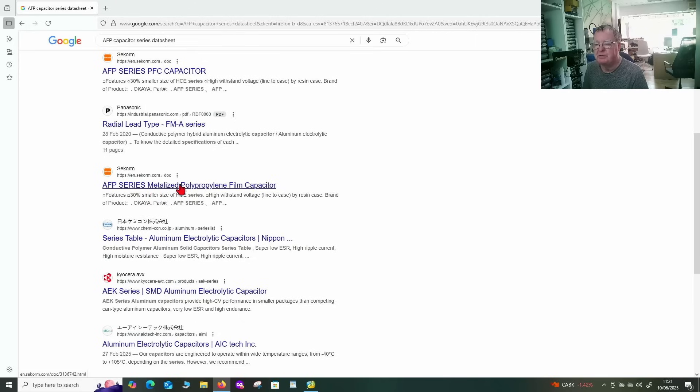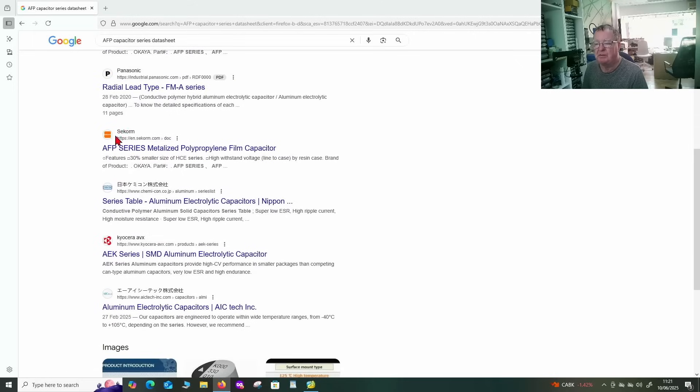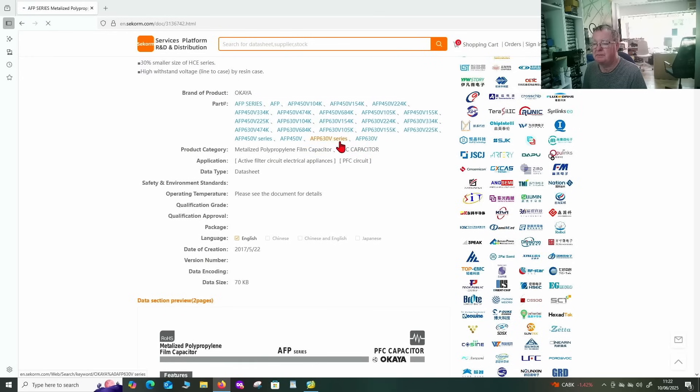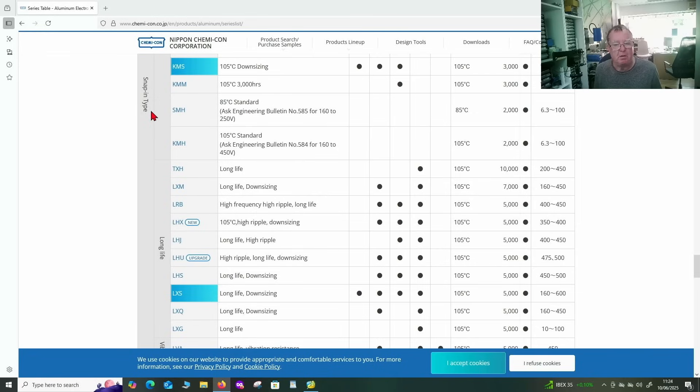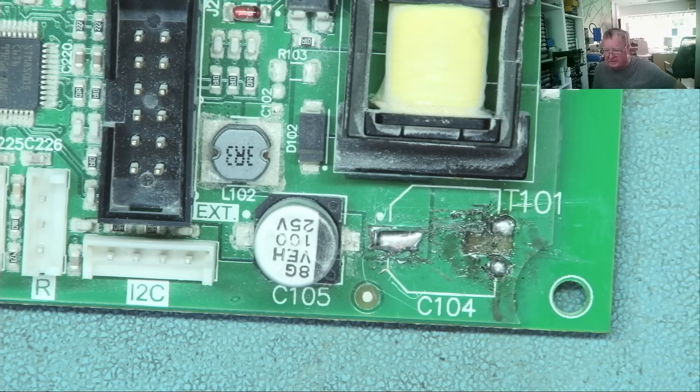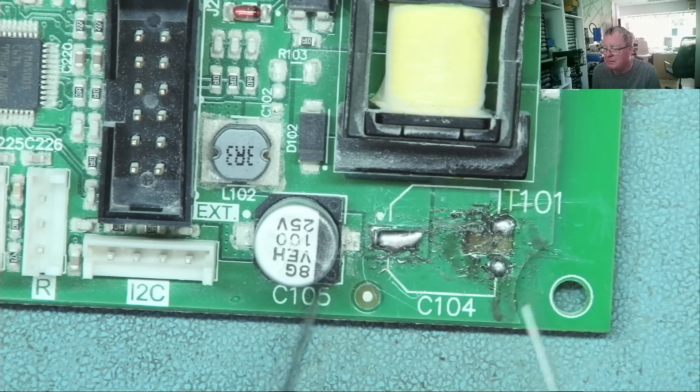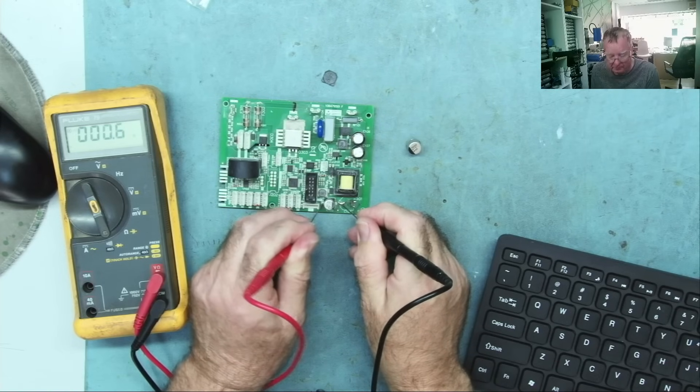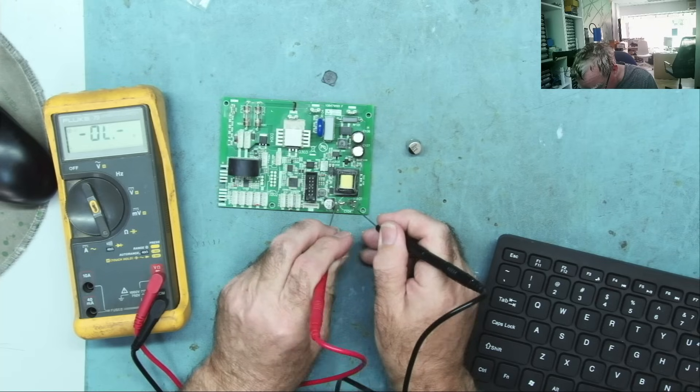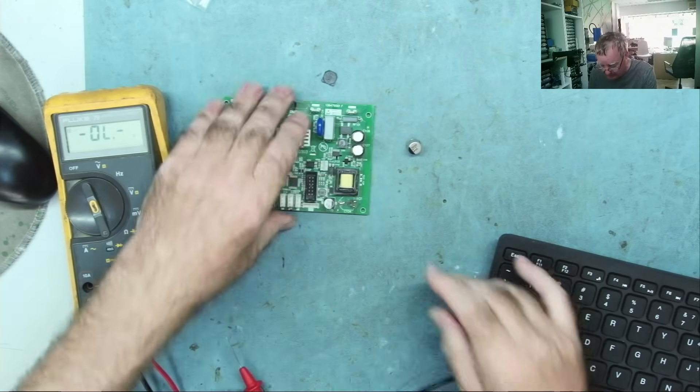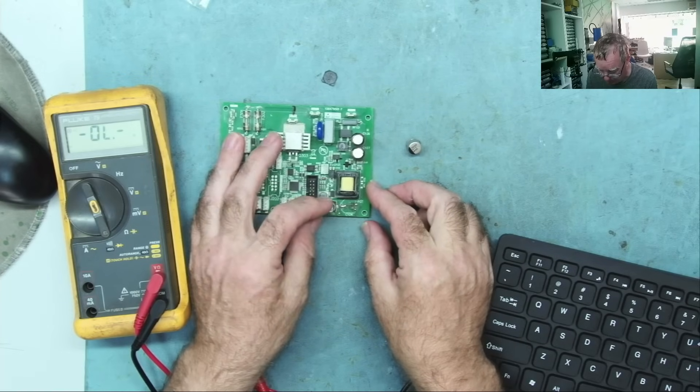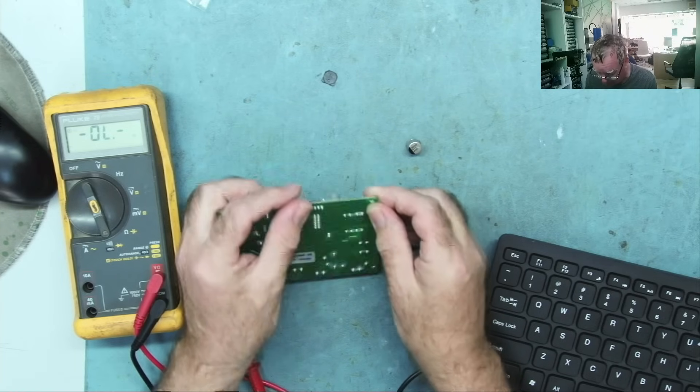So I'm just trying to figure out what voltage this capacitor is. I've searched for AFP capacitor series data sheet and we see various links. I can't quickly find the rating for this capacitor, but I don't think it's a problem because if we look at the PCB this is a 25 volt 100 microfarads. This end connects to here. Okay, and this end connects to here. So the two are in parallel with each other, so it can't be anything less than 25 volts. So that's what I'm going to put in there.